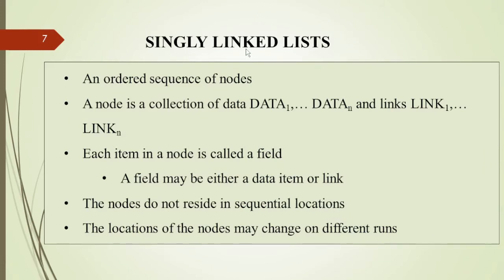There are different types of linked lists: singly linked list, doubly linked list, and circular linked list. In a singly linked list, it is an ordered sequence of nodes, and we can move from one node to another only in the forward direction. A node is a collection of data, and in each node we have a data field and a link field.